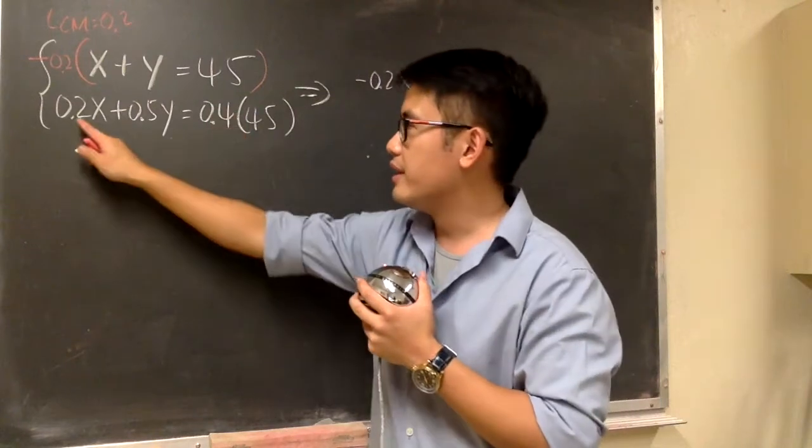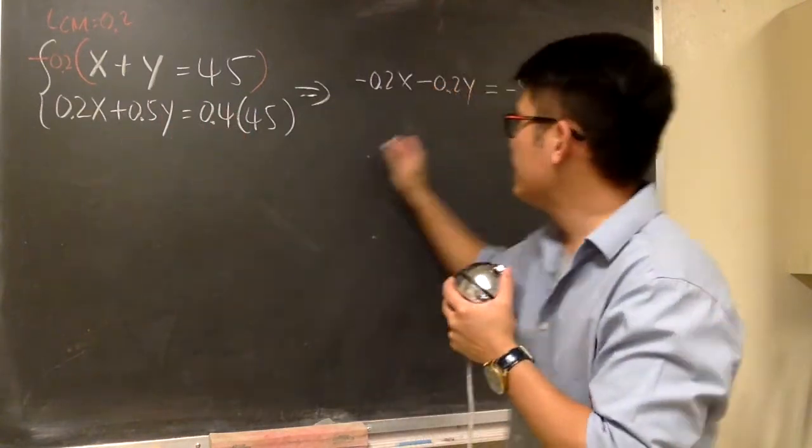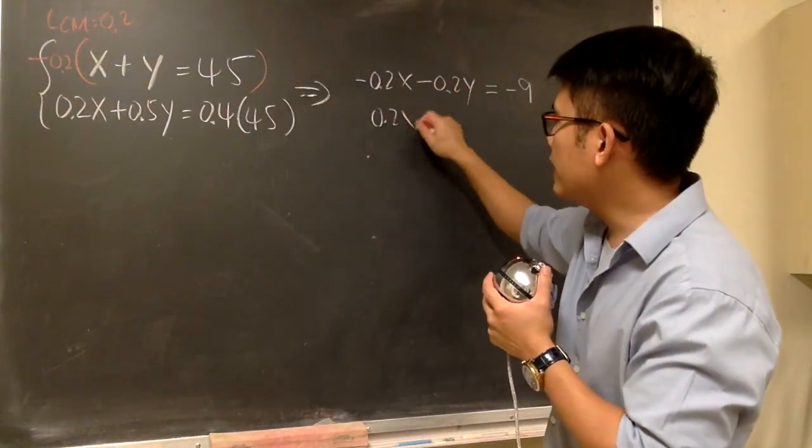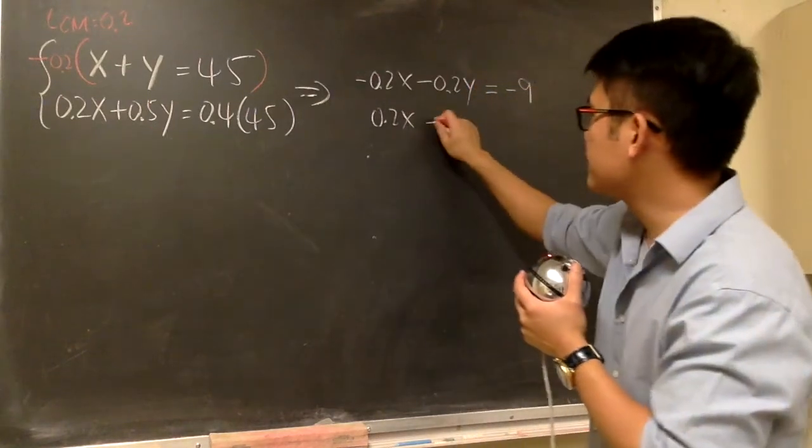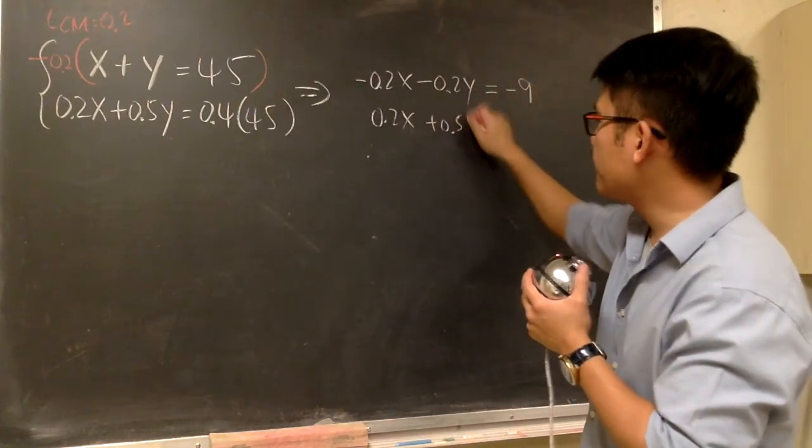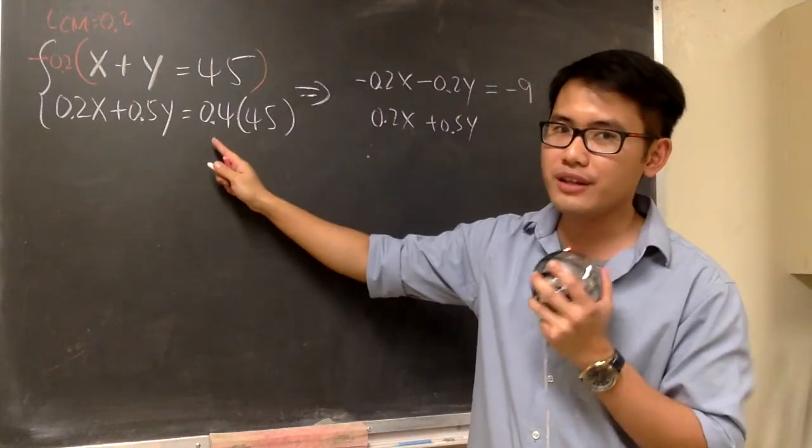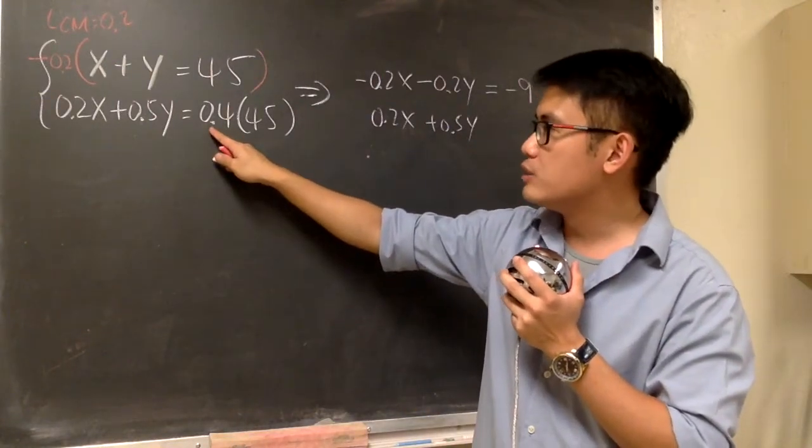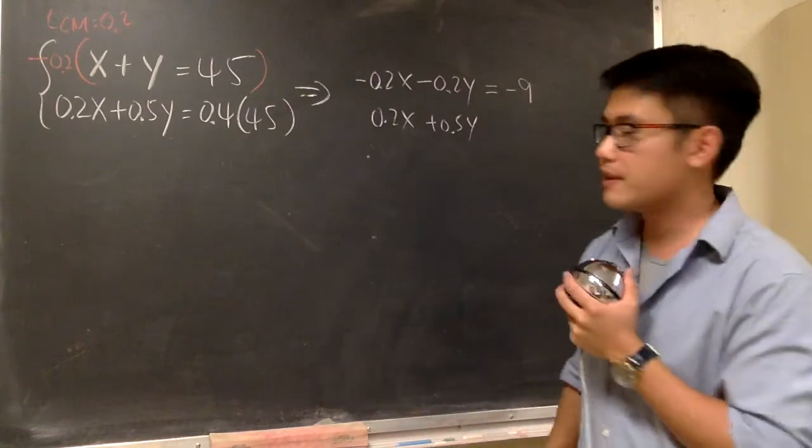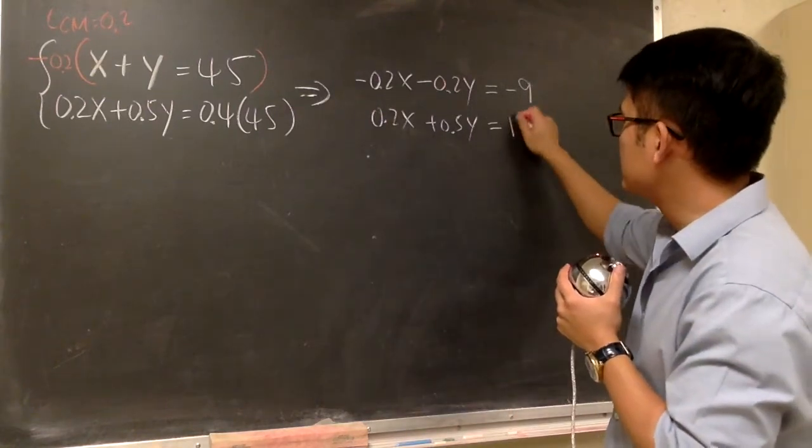And for the second equation, this and that stays. Let me just write it down. Positive 0.2x and this is positive 0.5y. And be sure, from the original question, we have to multiply 0.4 with 45, and we will end up with 18.